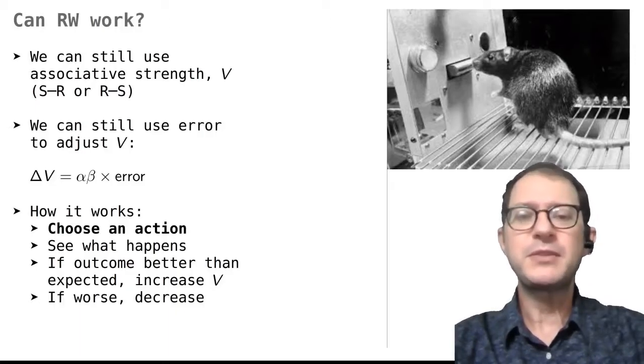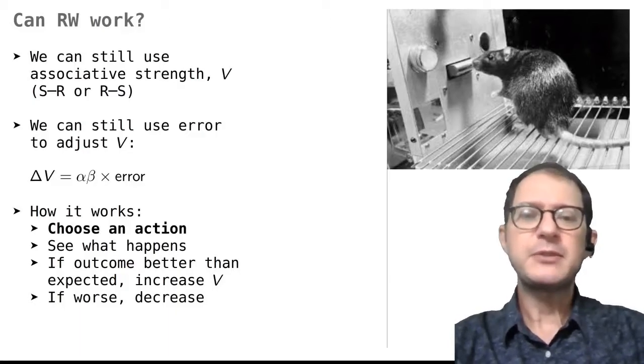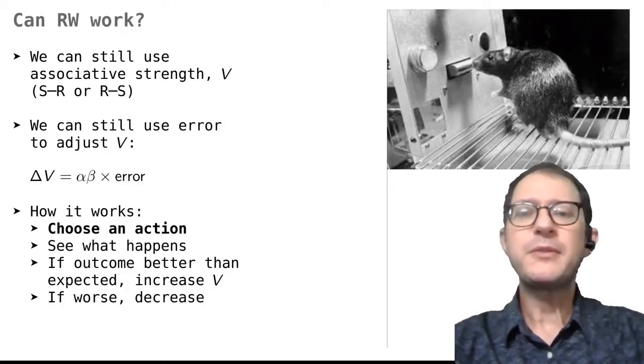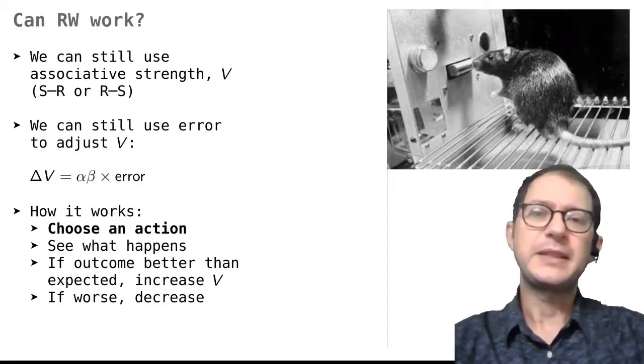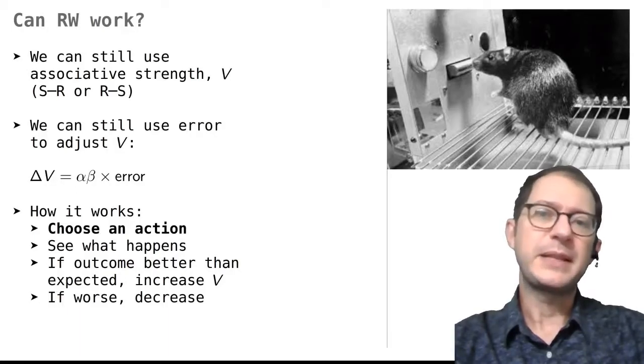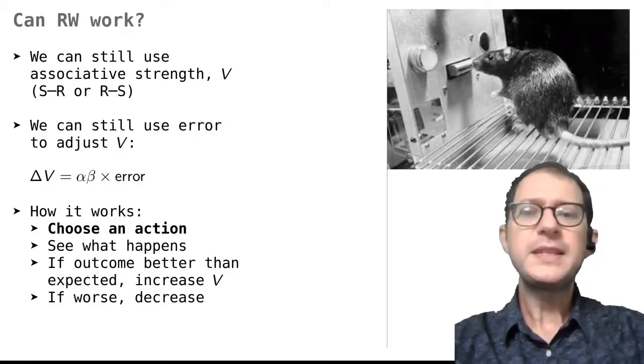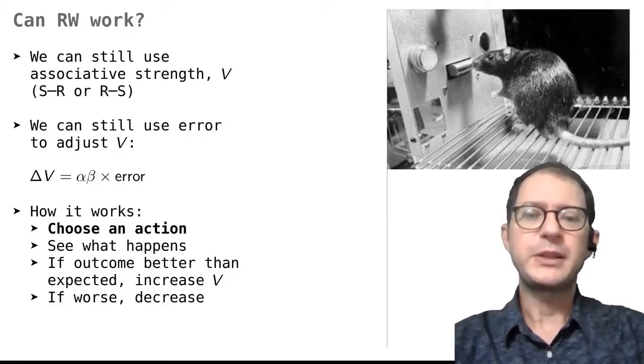In fact, we can interpret the associative strength, V, as the value that the rat gives to pressing the lever. This gives us a good intuition of what the error is about in instrumental conditioning. In practice, this would mean that the rat increases the associative strength if something better than expected occurs, and it decreases it if something worse than expected occurs.